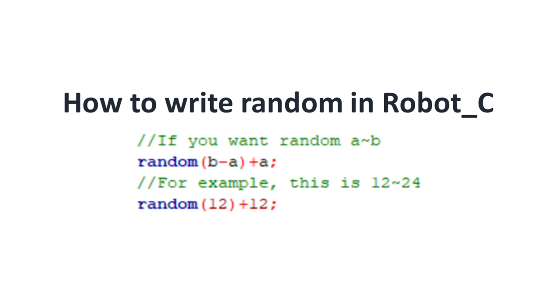This is how you write random in Robot C. If you run a random number from A to B, then you write random B minus A plus A. For example, this is 12 to 24 which you write like random 12 plus 12.